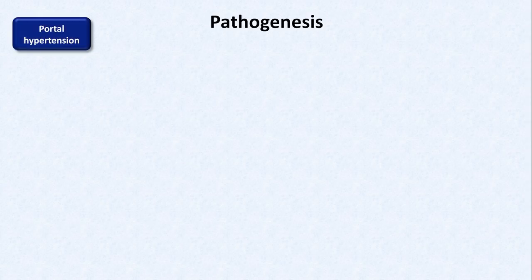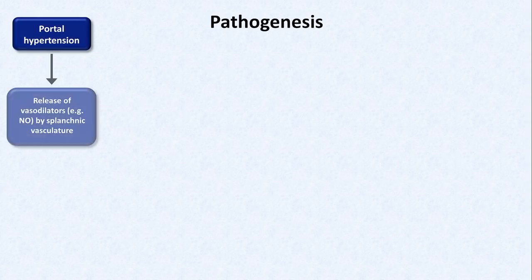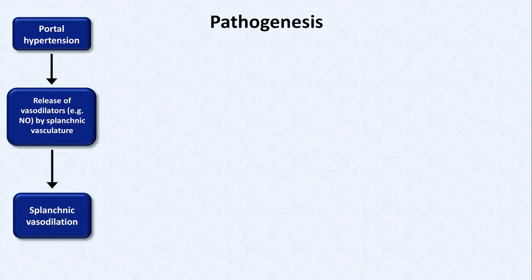Portal hypertension leads to release of vasodilators such as nitric oxide by the splanchnic vasculature, which leads to splanchnic vasodilation. The splanchnic vasculature refers to the arteries and veins that supply and drain the intra-abdominal and intra-pelvic organs, excluding the renal vessels.